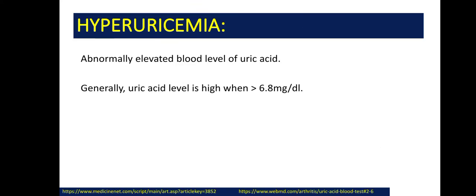Now coming to the definition of hyperuricemia — when do we call it hyperuricemia? Usually when the uric acid level is higher than 6.8 mg per dL, we call it hyperuricemia.